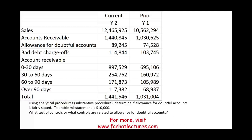In this session, we are going to look at analytical procedures specifically for the allowance for doubtful accounts. We will examine this account and perform analytical procedures to determine whether the account is fairly stated. But before we do so, we want to look at what type of test of controls are related to the allowance for doubtful accounts, and then we will run analytical procedures to determine whether the account is fairly stated.